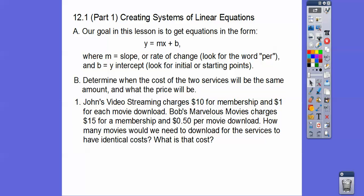John's video streaming charges $10 for a membership fee. There's our b and $1 for each movie download. Bob's Marvelous Movies charges $15 for a membership fee and 50 cents per movie download. So there's the word per. There's our slope. There's our b right there.